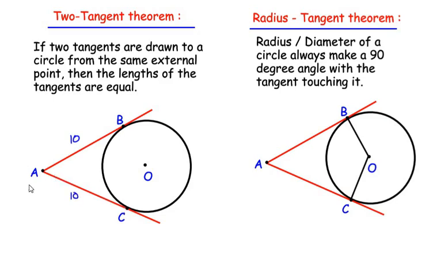The radius tangent theorem states that the radius of a circle always makes a 90 degree angle with the tangent touching it. With center O, radii OB and OC meet tangents at points B and C respectively. Since OB is a radius and AB is a tangent, angle OBA is 90 degrees. Similarly, OC is a radius and AC is a tangent, so angle OCA is also 90 degrees.